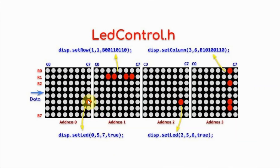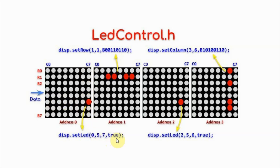We can also control individual LEDs on the module by using the setLED function. If we want to turn on a specific LED, we use setLED. The first argument is the address number, the second argument is the row position, the third argument is the column position, and then we put true to turn on, or false to turn it off.